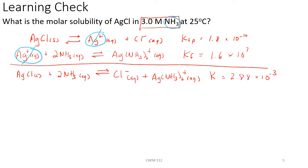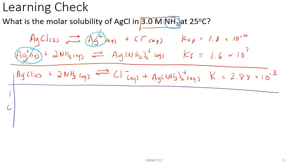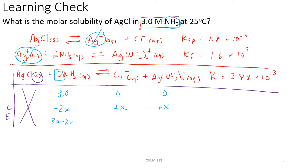From here, we set up an ICE table. We ignore solid silver chloride since it is a pure solid. The initial concentration of ammonia is 3 M, and initial concentrations of chloride and the complex ion are both 0. Ammonia decreases by minus 2x due to its coefficient of 2, chloride increases by plus x, and the complex ion increases by plus x. The equilibrium line is then 3 minus 2x for ammonia, x for chloride, and x for the complex ion.